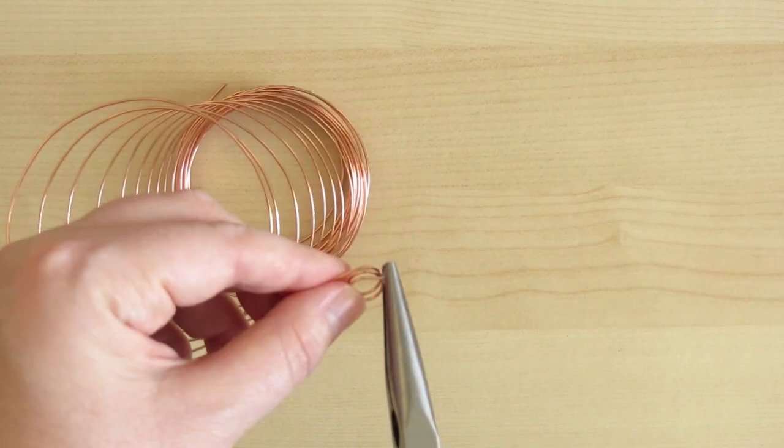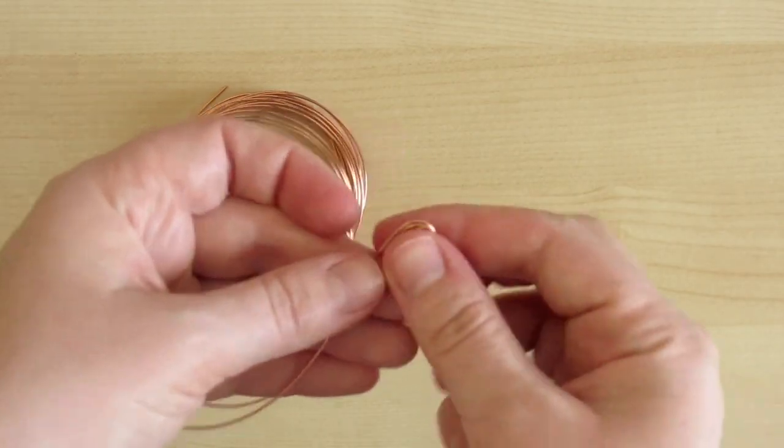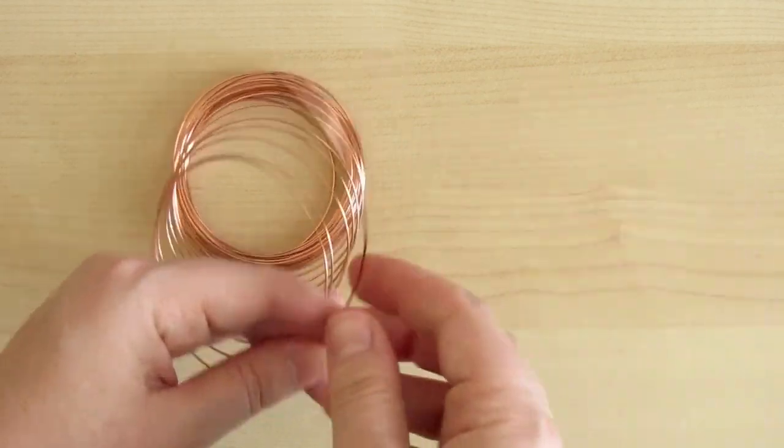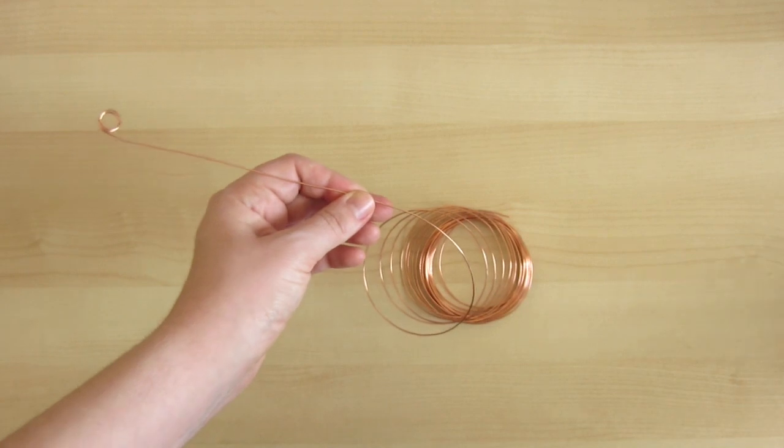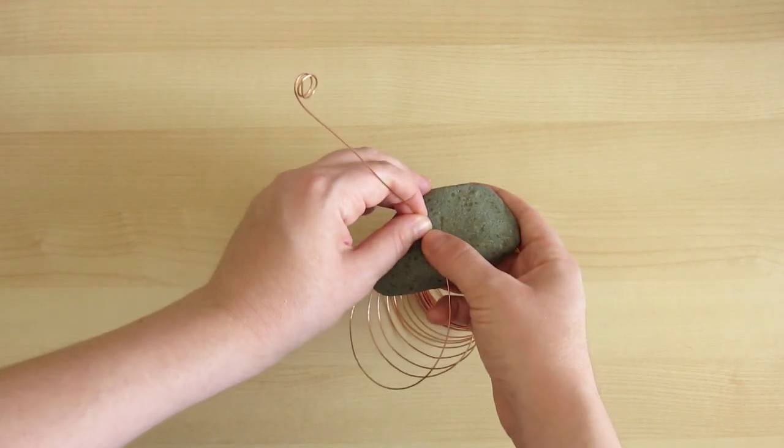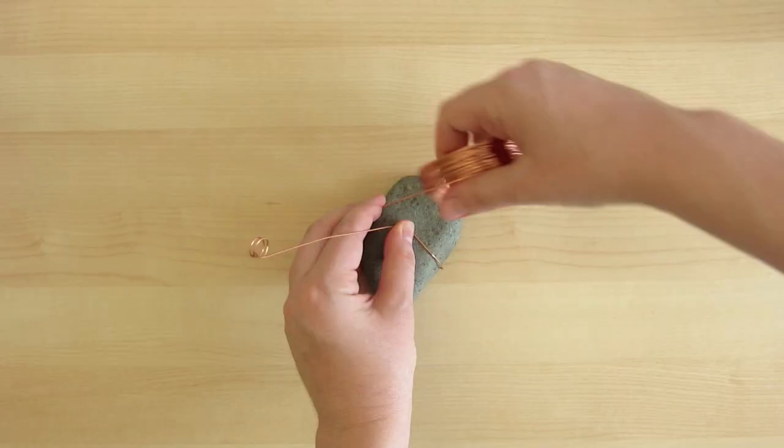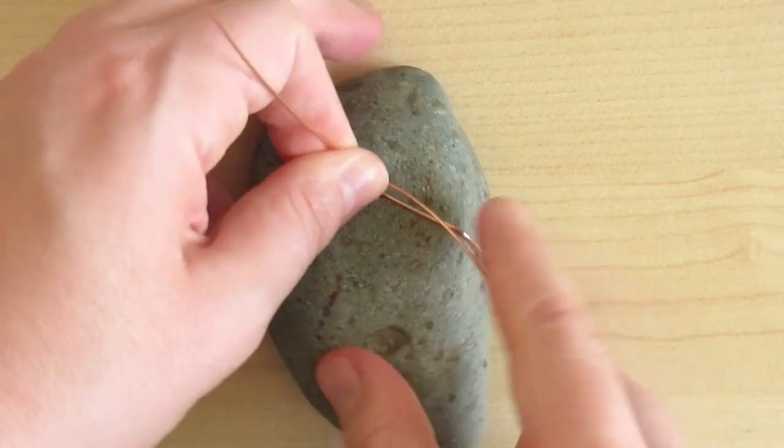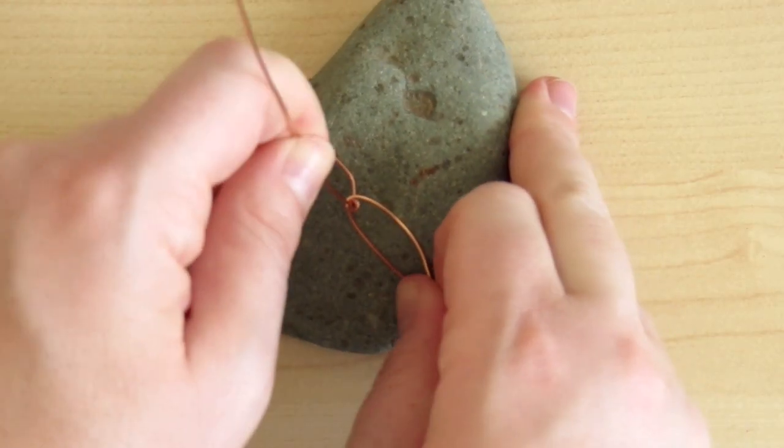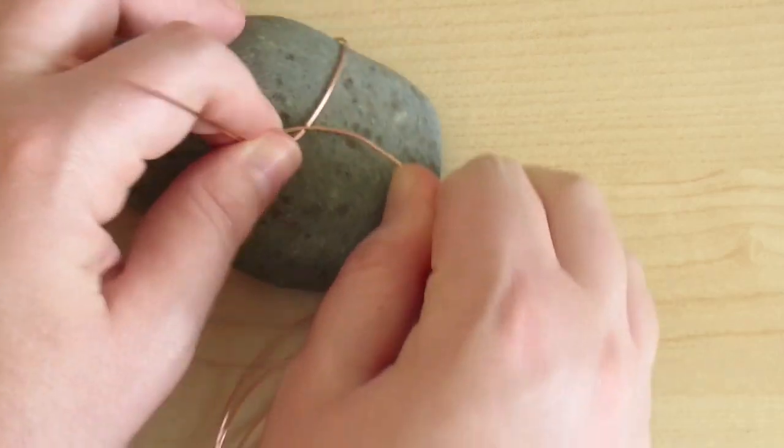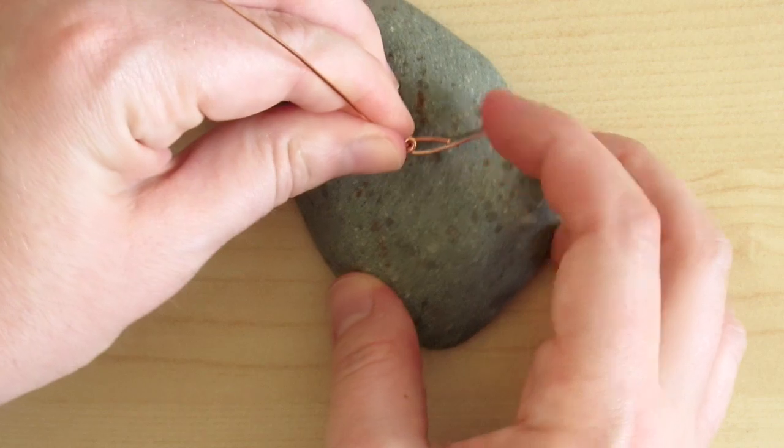From there, decide how tall you want it to be. I'm making mine about five inches tall. Then with your rock, put the wire in the middle, bend it up and wrap it around. Then wrap around the base in the middle, snip off the excess, and press the end in.